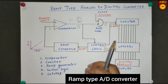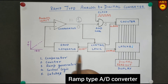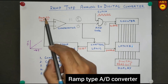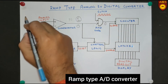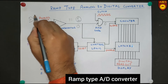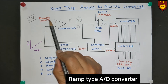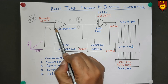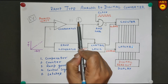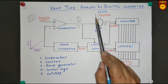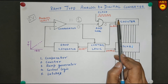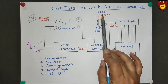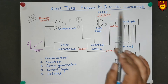To understand how this converts analog to digital, consider an example where the analog input is 5 volts. Initially the analog input is 5 volts and the ramp input is 0, so the Comparator gives a high output. Clock pulses pass to the counter, which starts counting: 1, 2, 3, 4, 5, and so on.